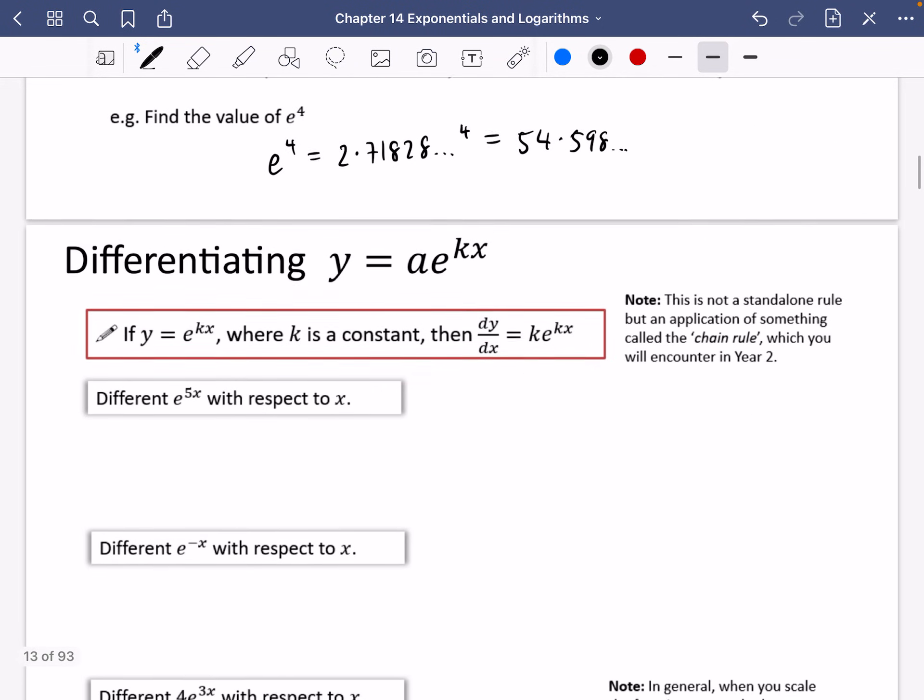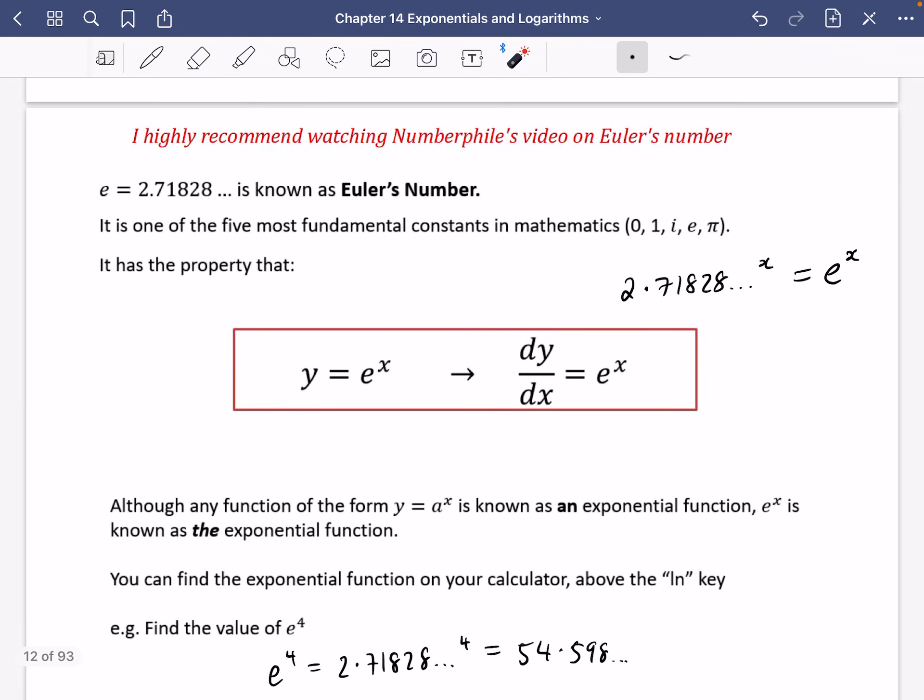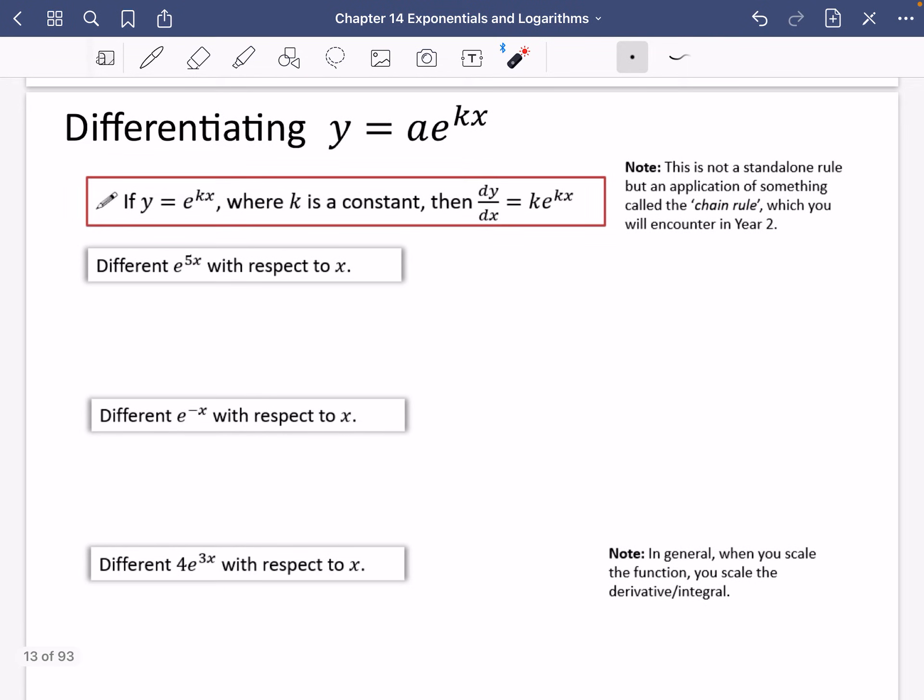So let's just stick on this theme. We're going to think about how we can differentiate these kinds of functions. So we're going to try and differentiate y = ae^(kx). So sort of variations on the exponential function. The first thing I've got here is if y is equal to e^(kx), where k is some kind of constant, then to differentiate it, you multiply by the coefficient of the power and keep the function the same. So it's a bit of a variation of what we said here. e^x differentiates to e^x. If there is a number in front of it, you multiply by that number and then keep the function the same. And what I've written here, this is not a standalone rule, but it's an application of something called the chain rule, which you will encounter in year two. And you will then be able to understand why this is true. But for now, in year one, you just need to trust me that this is how it works.